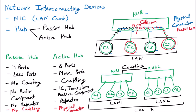Another problem with physical connection is broadcasting. Suppose only C1 wants to send data to C3 and nobody else is sending. C1 starts transmitting — the data reaches C3, but because all ports share a single wire, data is also sent to C2 and C4 unnecessarily. This means data cannot be privately accessed between C1 and C3.